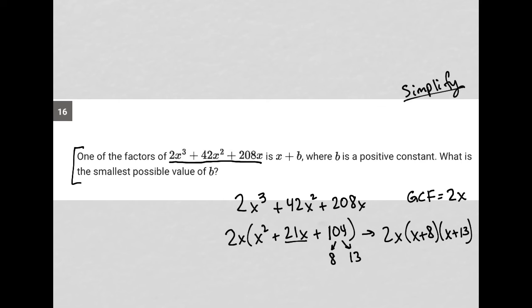The question says one of the factors is x plus b, and it just wants the smallest possible value of b. So the smallest possible value of b would be 8, right? Because we have x plus 8, which is in the form of x plus b. We have x plus 13, which is also in the form of x plus b. But between 8 and 13, 8 is the smallest number. So our answer here is 8.